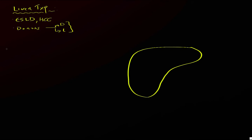Let's start talking about the basic anatomy for these liver transplants. For these patients, there are essentially three vascular anastomoses that you need to know about, and one non-vascular anastomosis.